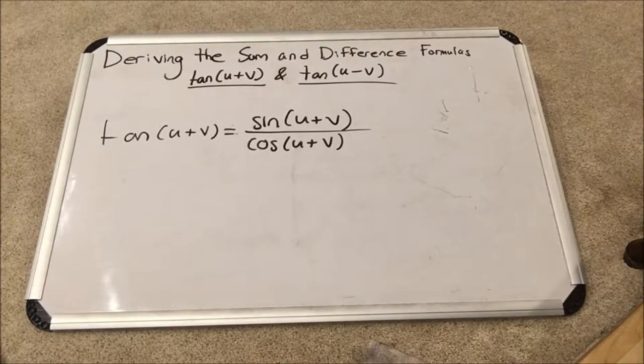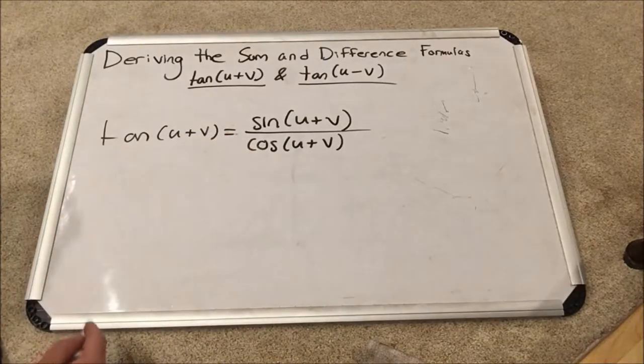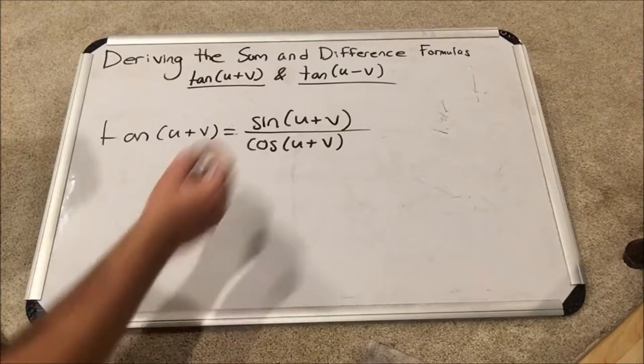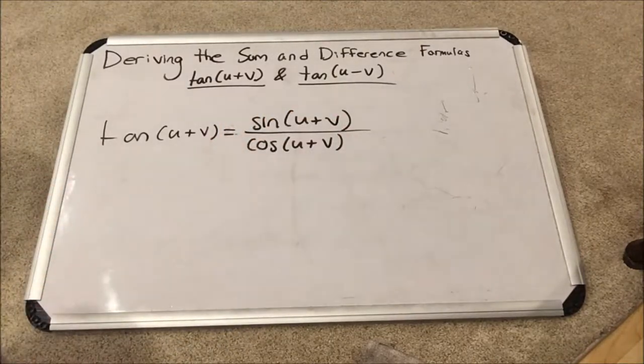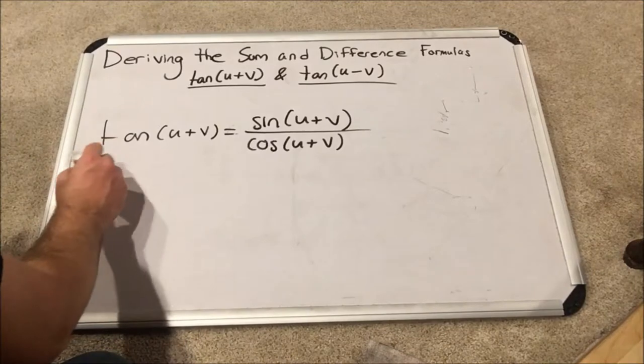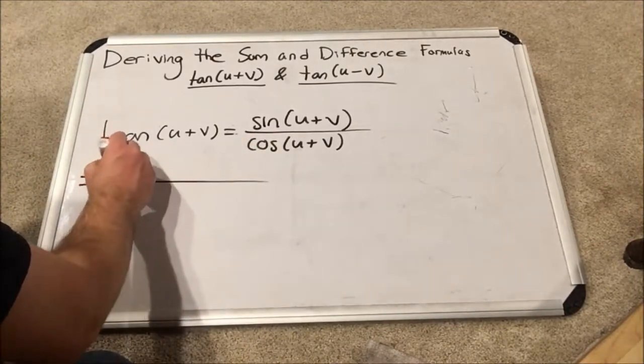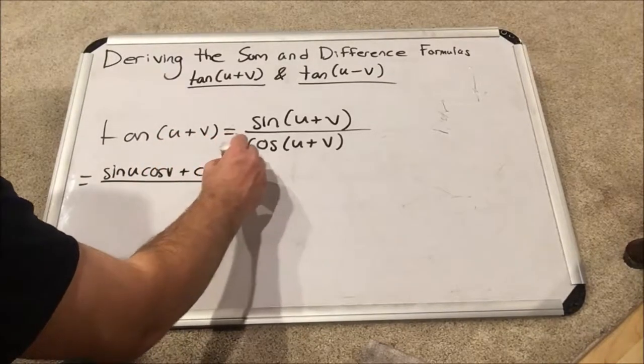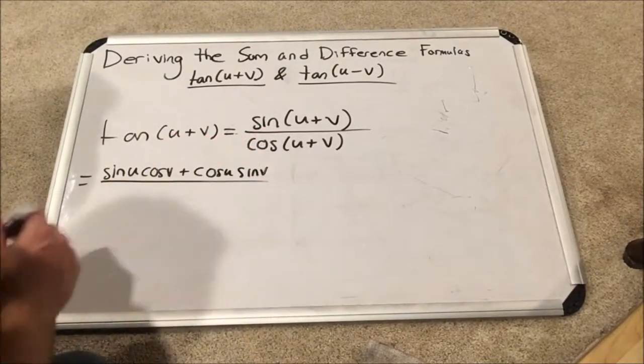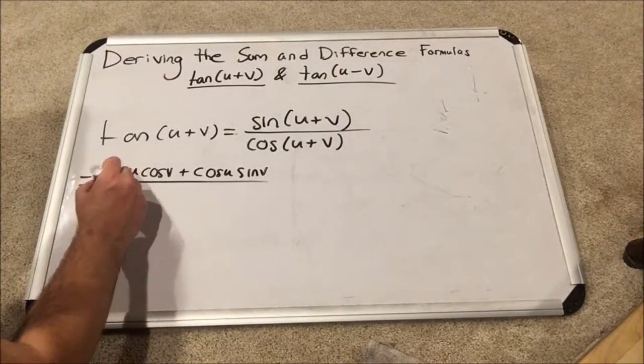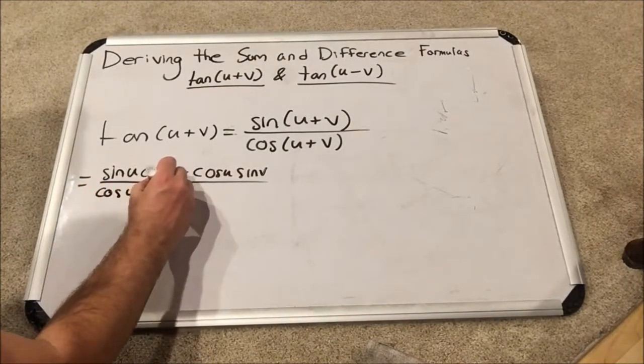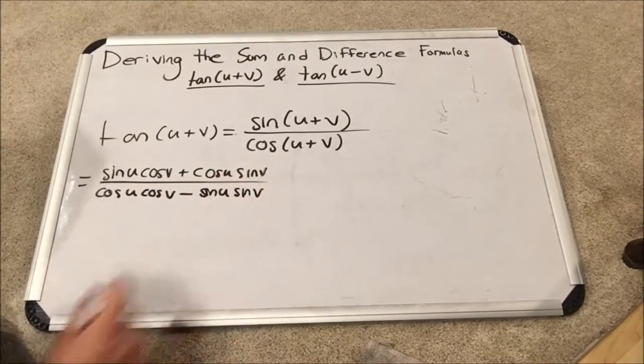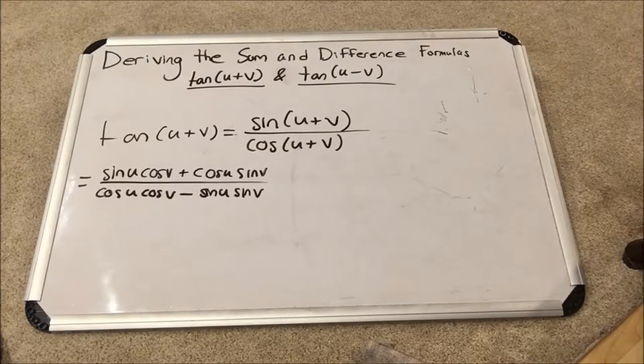Next, I am going to take these two terms and I am going to expand them using the sum and difference formulas I derived in part 1 and part 2 of this three-part series. So this is equal to sine u cosine v plus cosine u sine v. That's what's going on on top. On bottom, I have cosine u cosine v minus sine u sine v. And these are those two formulas written out.